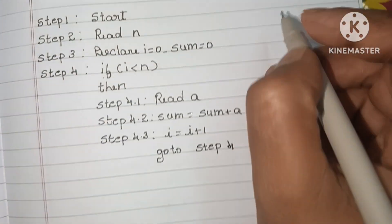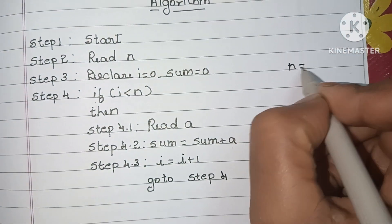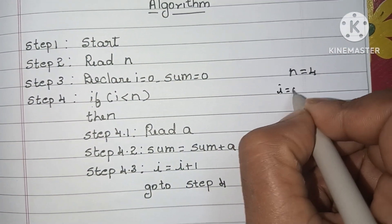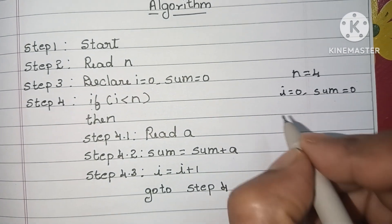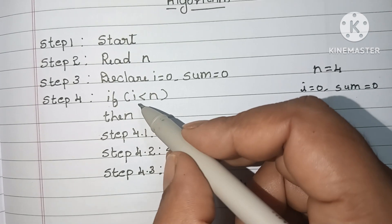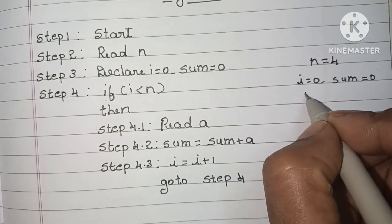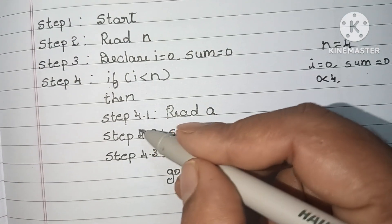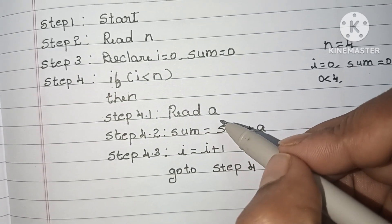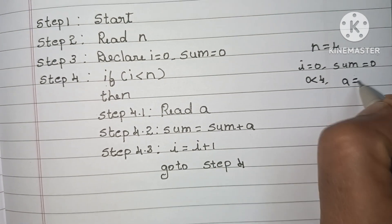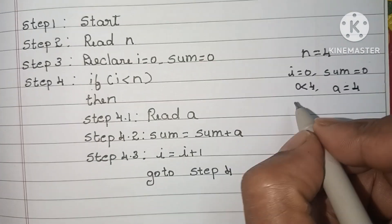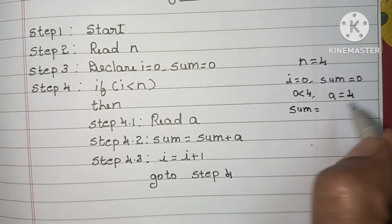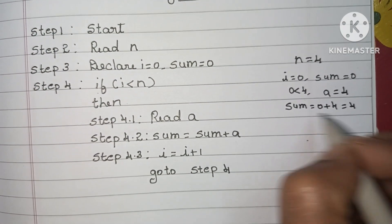Consider n = 4. We have to find the sum of 4 numbers. Declare i = 0 and sum = 0. Check if i < n: 0 < 4 is true. Execute step 4.1 — read the first number; consider a = 4. Find sum: sum = sum + a = 0 + 4 = 4. Our sum value becomes 4.